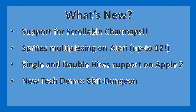The main features are basically support for a scrollable character map — meaning also tilemap support, which I'll explain in a moment. There's sprite multiplexing on the Atari, which increases the maximum number of sprites but also greatly improves visuals in that sprites don't need to be flickering all the time — they only flicker when more than four sprites overlap on the same row. There's now single and double high resolution support on the Apple II, which opens the door for releasing a game on 64k for people who don't have the 80-column card expansion. And there's a new tech demo called 8BitDungeon.